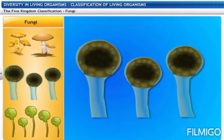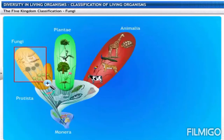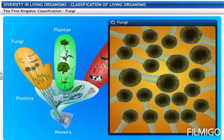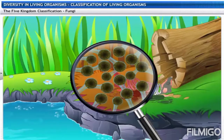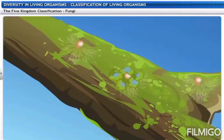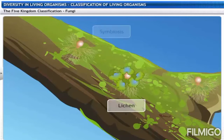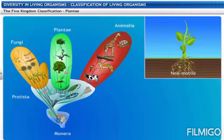Kingdom Fungi includes mushrooms and bread molds like Rhizopus and Mucor. These are not plants and do not perform photosynthesis — fungi are purely heterotrophic. They are eukaryotic, and even multicellular fungi exist. Their cell wall is made up of a tough carbohydrate called chitin. Fungi generally feed on decayed dead plants and animals, hence they are saprophytic. Some fungi live in association with algae, forming a relationship known as lichens, living in symbiosis. Fungi are also parasitic and cause diseases in both plants and animals.